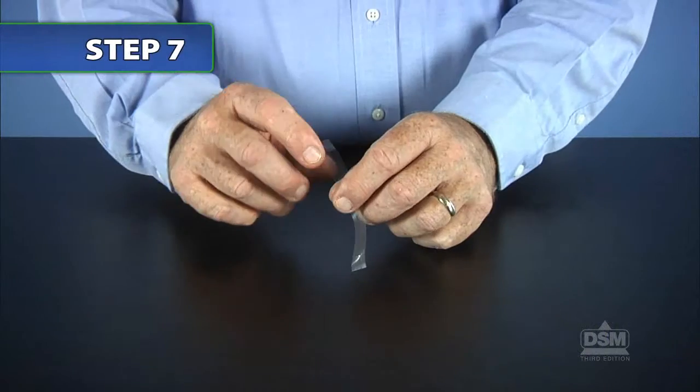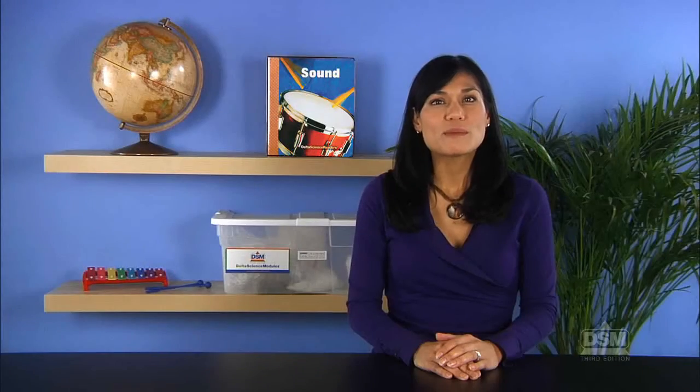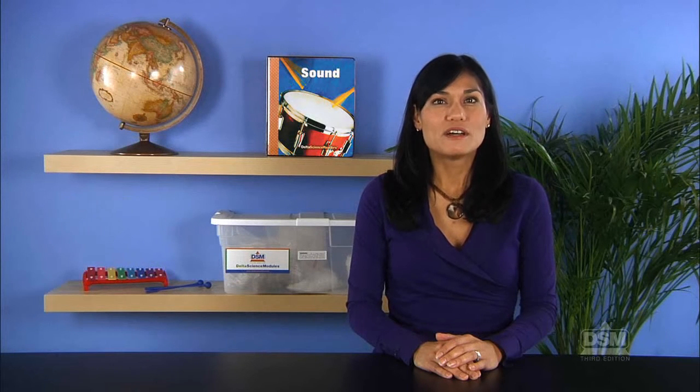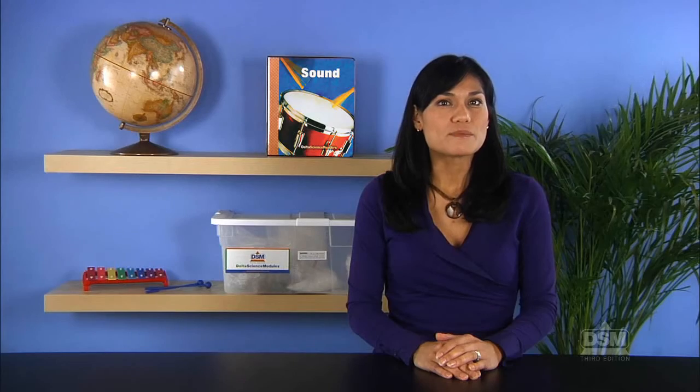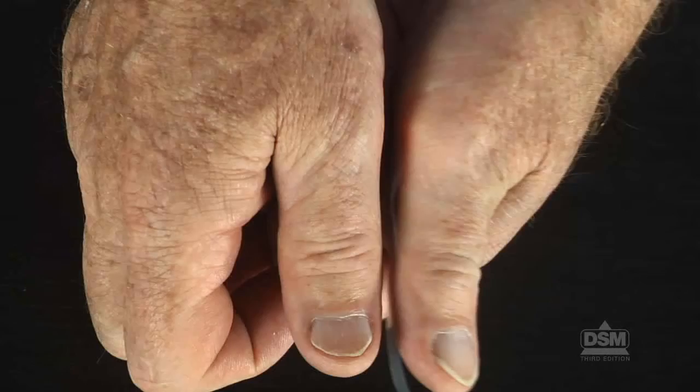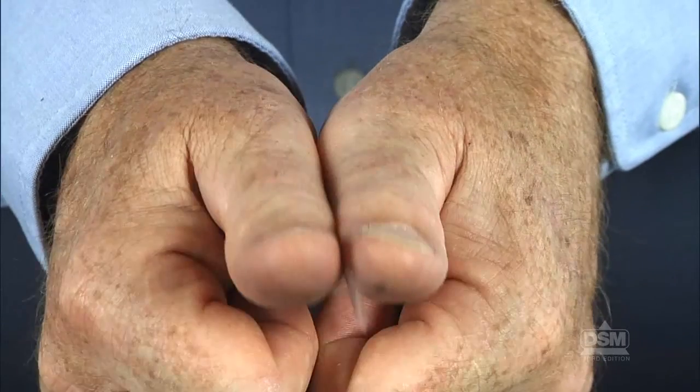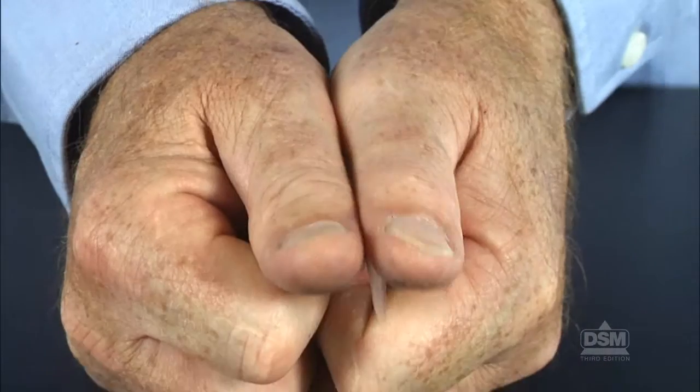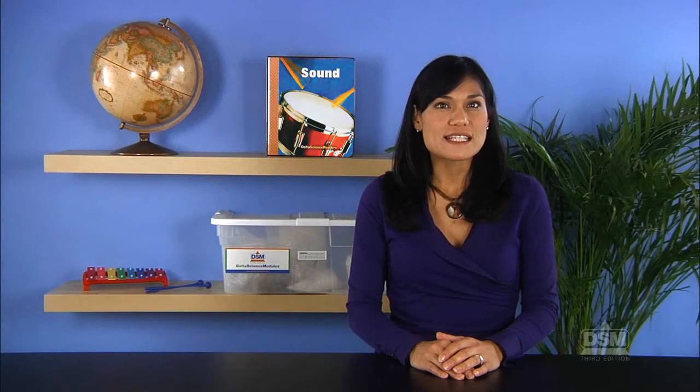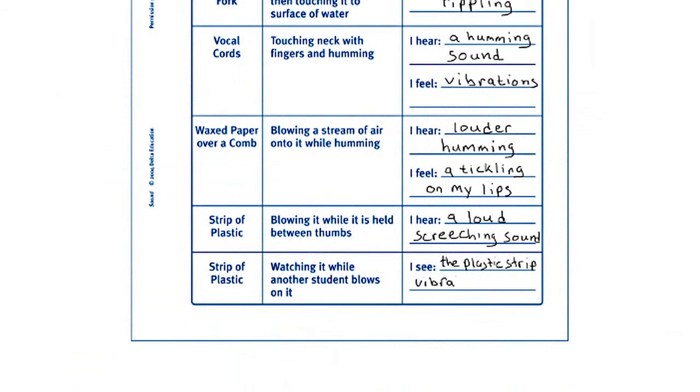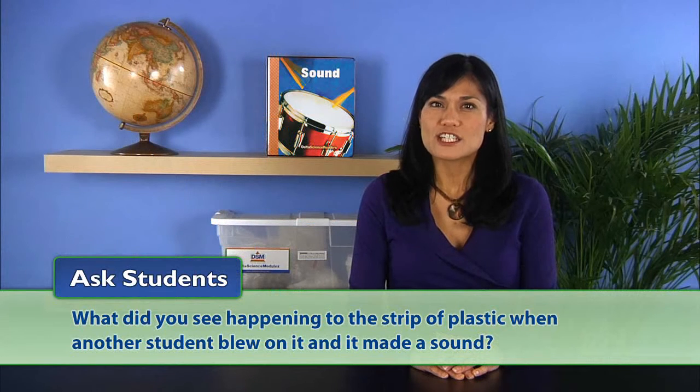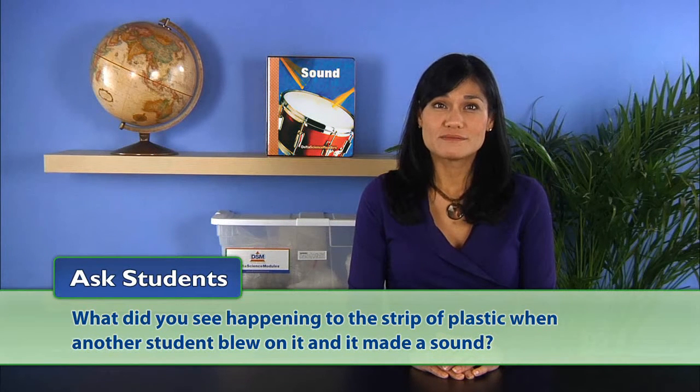Next, give each student a strip of plastic. Instruct them to put their thumbs together side by side, thumbnails up. Point out the small space between their thumbs. Have them place the strip of plastic between their thumbs, pulling it tightly and holding it in place with the bottoms and tops of their thumbs. Then blow on the part of the plastic that is in the space between their thumbs. Encourage them to watch for changes in the plastic. Have them record their observations. Ask students what they saw happening to the strip of plastic when another student blew on it and made a sound. The students will see that the plastic was vibrating.